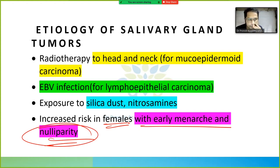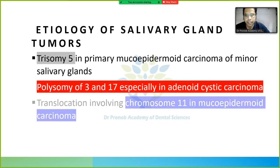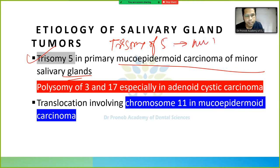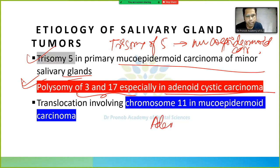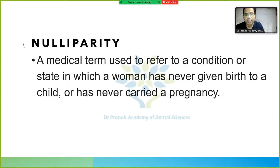Nulliparity will be explained shortly. Other causes include trisomy of chromosome 5 in primary mucoepidermoid carcinoma of minor salivary glands, and polysomy of chromosomes 3 and 17 in adenoid cystic carcinoma.